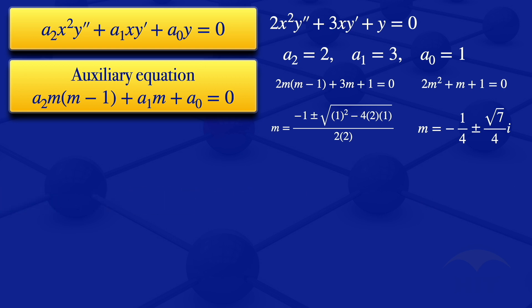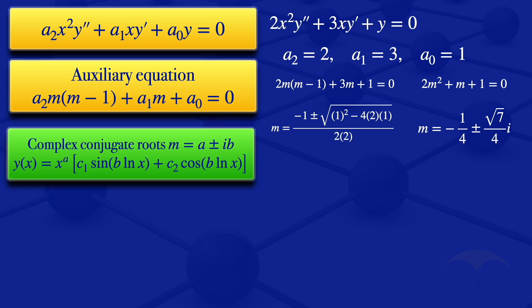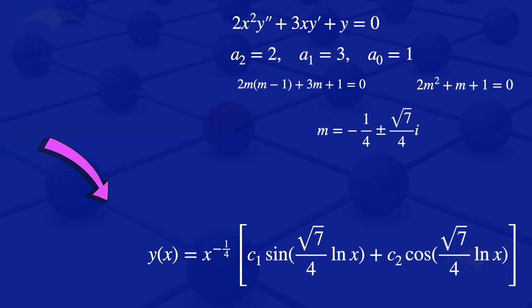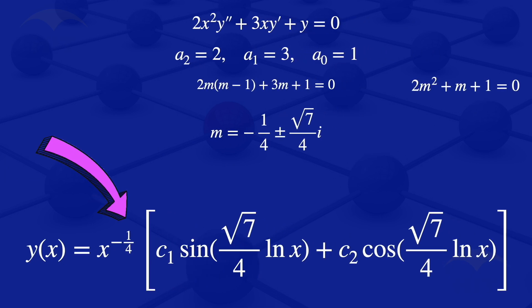For complex conjugate roots, the general solution is x to the power a times [c1 times sine(b ln x) plus c2 times cosine(b ln x)]. Here a equals minus 1/4 and b equals root 7 over 4. Substituting, the general solution is x to the power minus 1/4 times [c1 times sine(root 7 over 4 times ln x) plus c2 times cosine(root 7 over 4 times ln x)]. This is the general solution of the third Cauchy-Euler equation.